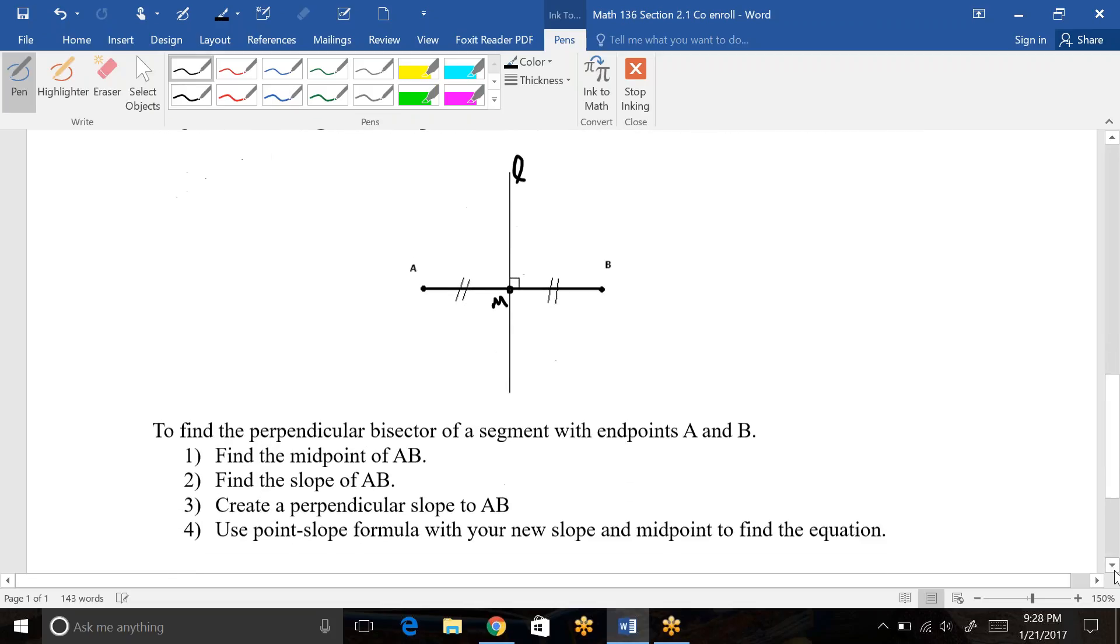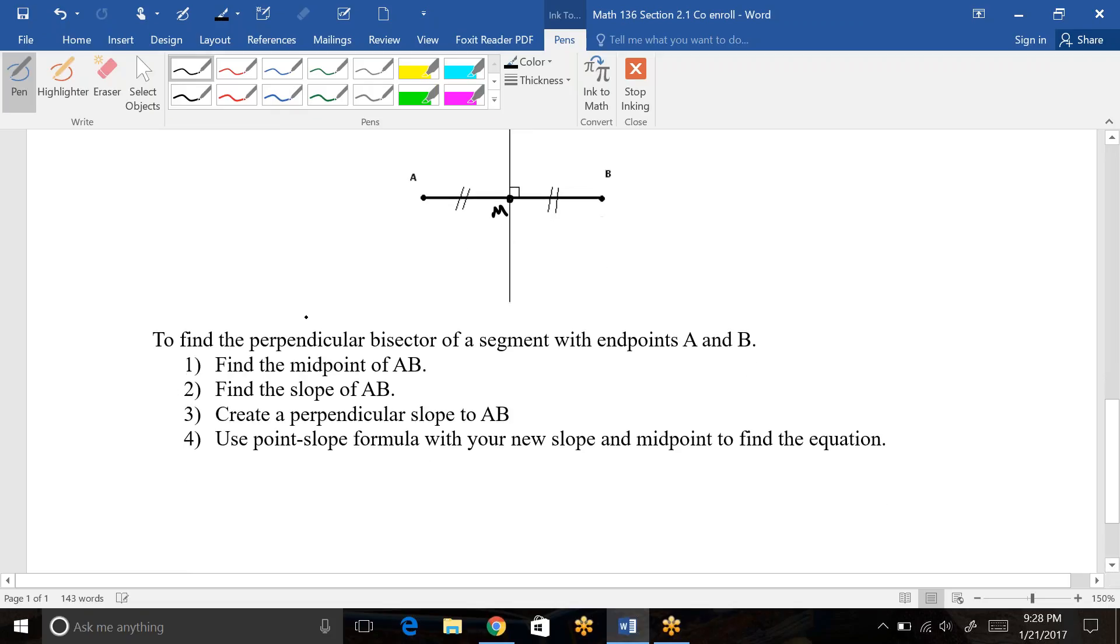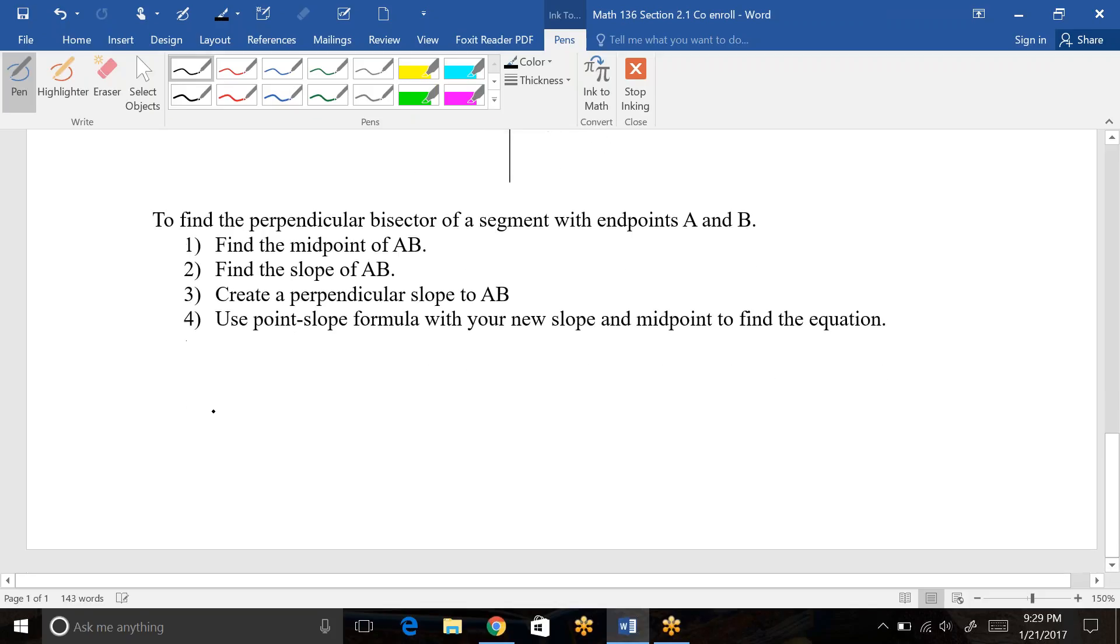So there's some steps if we want to find a perpendicular bisector. To find a perpendicular bisector of a segment with endpoints A and B, we need to first find the middle of those two ordered pairs, then we will find the slope of this line. The reason we need the slope of this line is because this is perpendicular to it, so if we know the slope of the original line, we know how to find a perpendicular slope and that is step three. And then step four is use point-slope formula with your new slope and midpoint to find the equation.